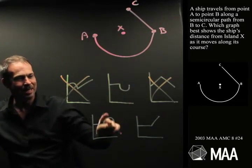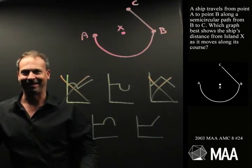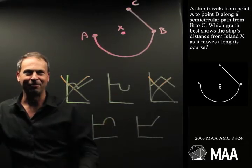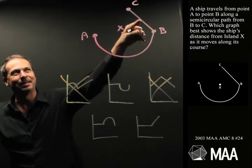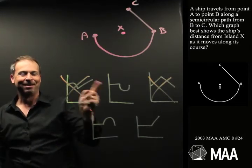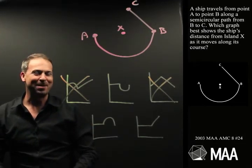It's either B, D or E. I like that. So, can I eliminate one of these now? What can I know about going from B to C and about its distance from X? Hmm. Think about it. Which of these three remaining graphs is correct?